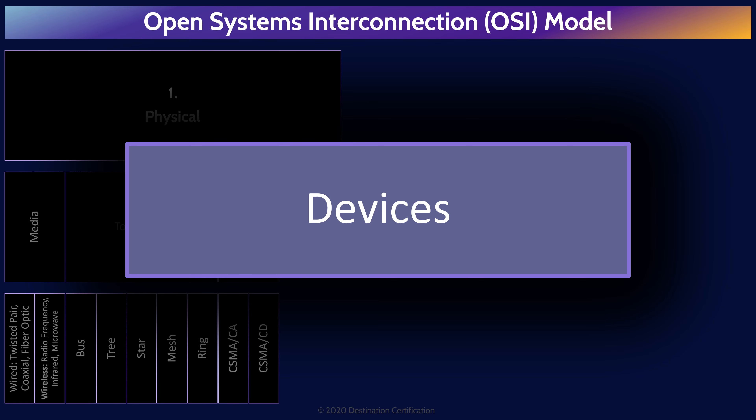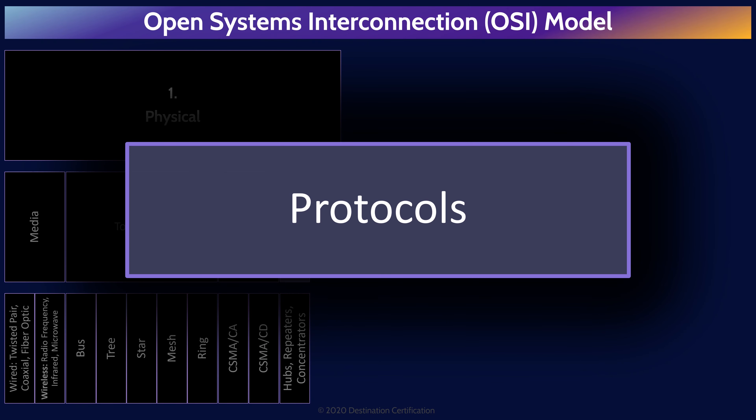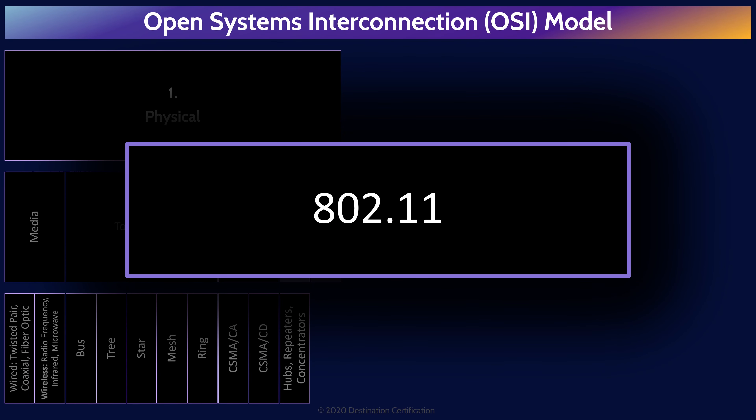The major devices that operate at the physical layer are hubs, repeaters, and concentrators. These devices have no intelligence — they just repeat signals, but they do it incredibly quickly and efficiently. At the lowest level of the OSI model, the physical layer, there is essentially zero intelligence and zero ability to make decisions, but wicked good speed. As we move up, at each layer we gain more intelligence at the cost of efficiency. The major protocol at Layer 1 is 802.11 — a whole family of protocols for wireless local area networks — including 802.11a, 802.11b, G, N, AC, and the upcoming Wi-Fi 6, 802.11ax.